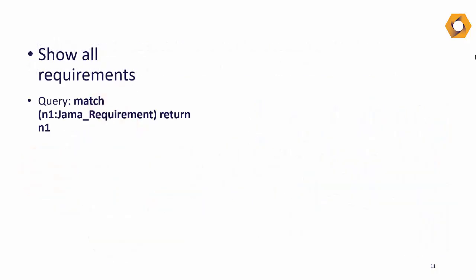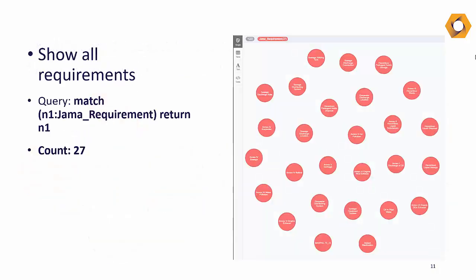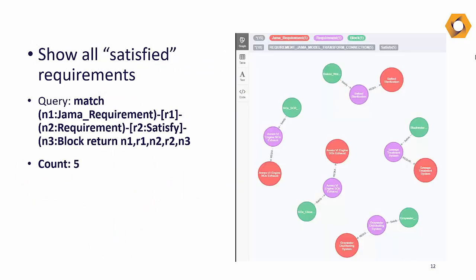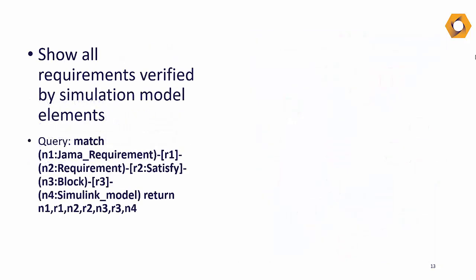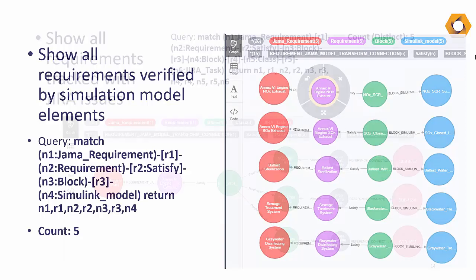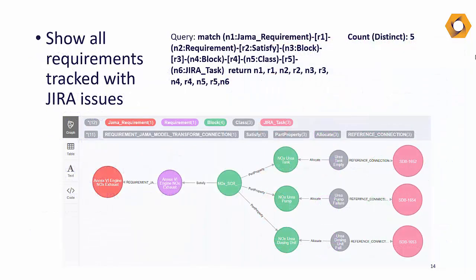How many requirements does the project have? How many are currently satisfied by the system design? How many can be verified by simulation? And how many are tracked to monitor the progress of the system development on a real-time basis?